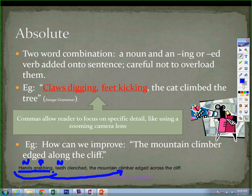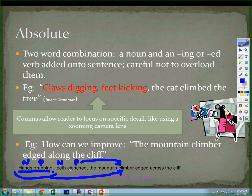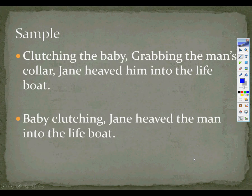Teeth — noun; clenched — participle. So we have a second absolute. Do we always have to use two absolutes in a row? No. Can the absolute be at the end of the sentence? Yes. Can we use more than one absolute? Yes. Can you do more than two or fewer than two? Absolutely — no pun intended.